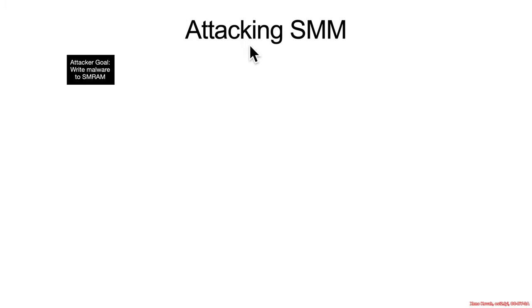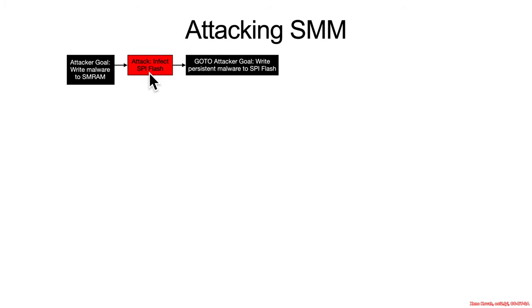Let's get started on understanding the attacking SMM threat tree. The attacker's goal is to write malware into SMRAM. One way they can do that is to infect the SPI flash, which brings us back to the previous tree. If you infect the BIOS, the BIOS sets up the SMRAM, and therefore as an attacker you're guaranteed to be able to write malware into SMRAM. We've already seen how infecting the BIOS works.